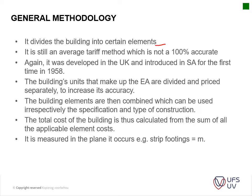This method divides the building into certain elements. It is still an average tariff method, which is not 100% accurate. It was developed in the UK and brought to South Africa in 1958. The building units that make up the elemental analysis are divided and priced separately to increase accuracy. The main idea is dividing the building into certain sections, and it is linked to the accurate methods of measurement. The building elements are then combined and can be used irrespective of specifications and type of construction.